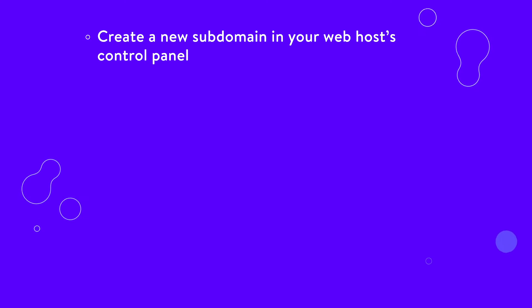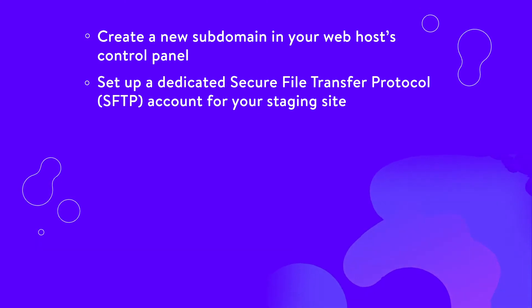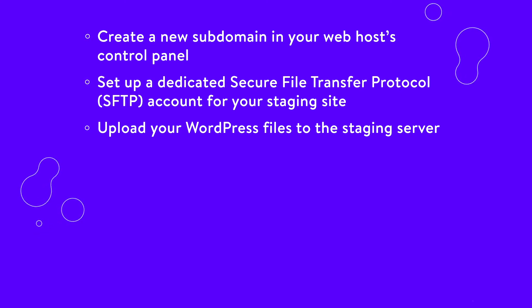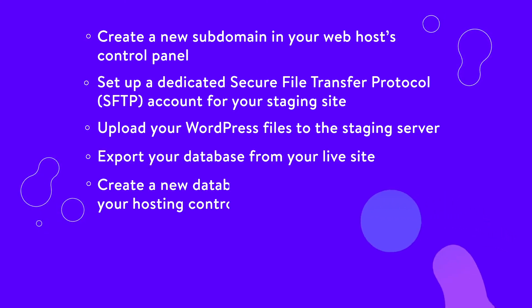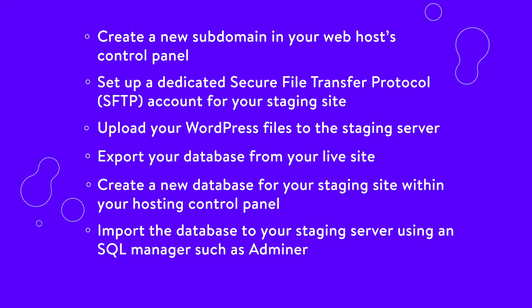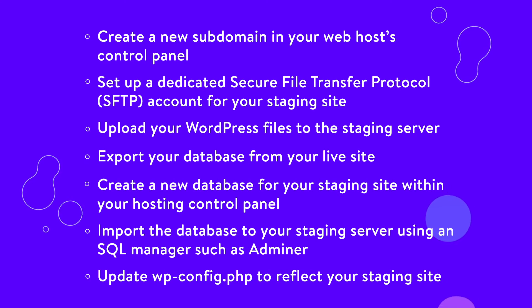There are seven general steps you need to set up a manual staging site. First, create a new subdomain in your web host's control panel. Set up a dedicated secure file transfer protocol account for your staging site. Upload your WordPress files to the staging server — the best way is to install a fresh version of WordPress, then upload your themes, plugins, and uploads folders. Export your database from your live site and create a new database for your staging site within your hosting control panel. Now import the database to your staging server using an SQL manager such as Adminer. Lastly, update wp-config.php to reflect your staging site.